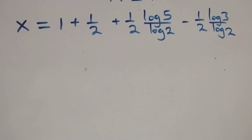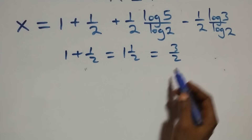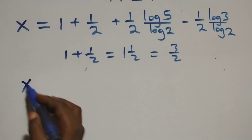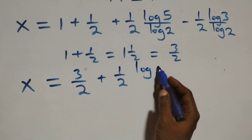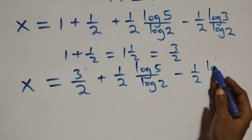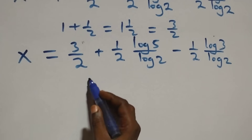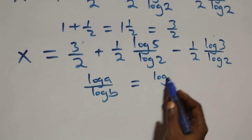So the next step here, 1 plus 1 over 2 is the same thing as 3 over 2. Just before we continue, let me ask for a favor from you — just a subscription, a like, a share and a comment, which is actually free. Thank you for your support. Now, all we have becomes x equals to 3 over 2 plus 1 over 2 log 5 over log 2 minus 1 over 2 times log 3 over log 2.